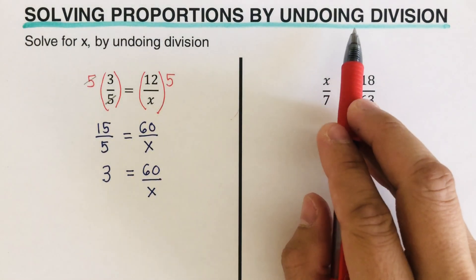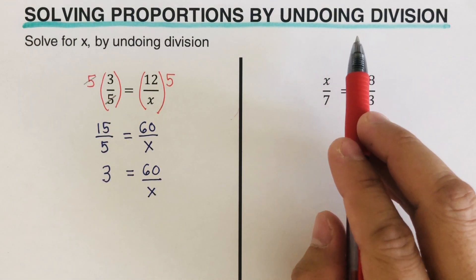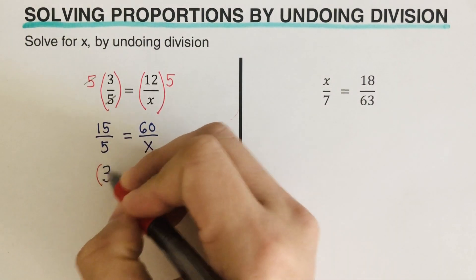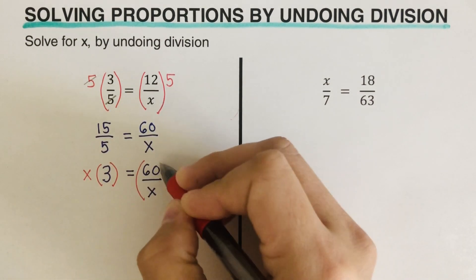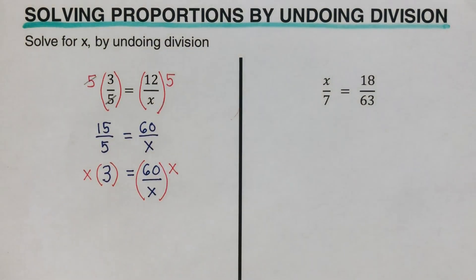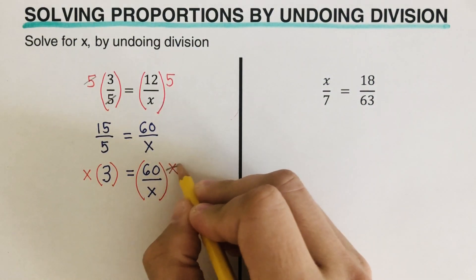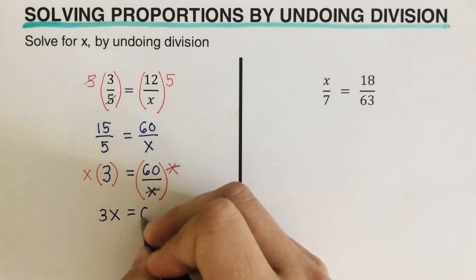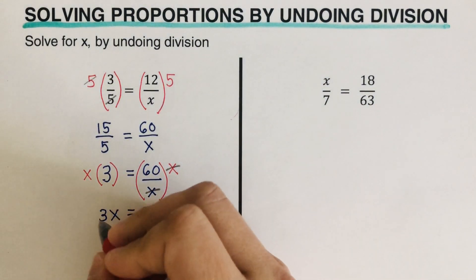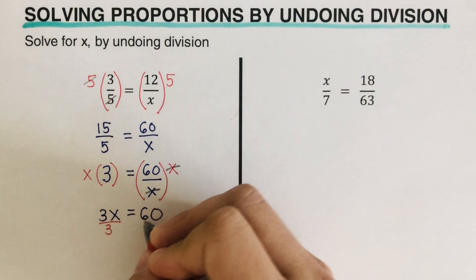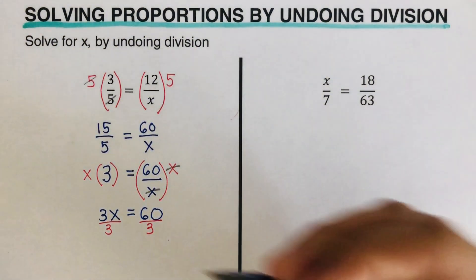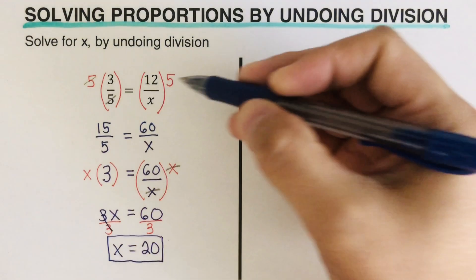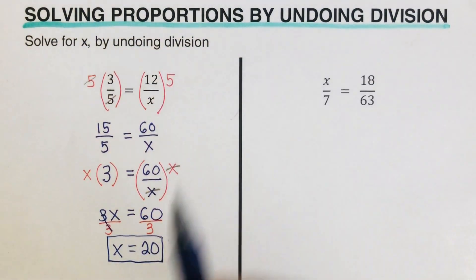To undo division again we use multiplication, so I am going to multiply both sides by x. Then I can cross out the x in the denominator, leaving 3x equal to 60. Dividing both sides by 3, we get x equal to 20. So the value of x, which is the denominator of 12, is 20.